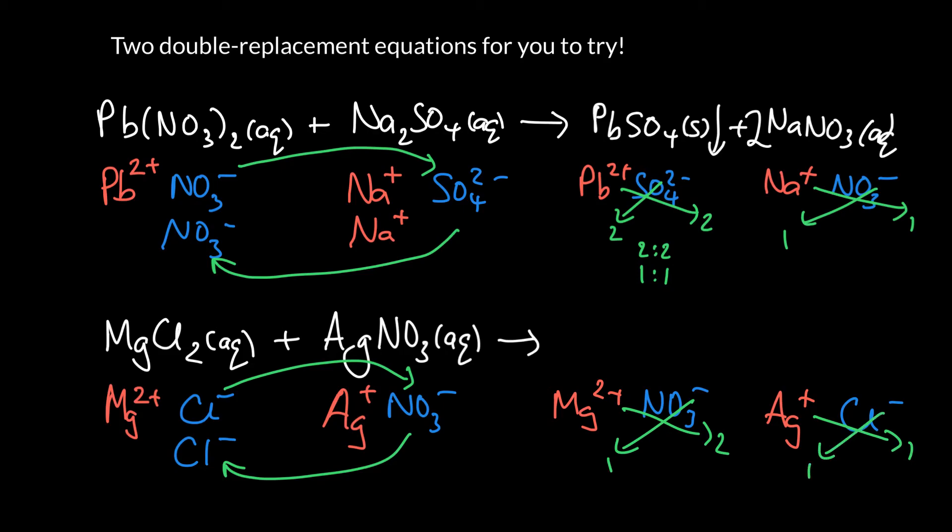So everything is totally fine. Remember, we don't ever write the ones in unless we're really trying to make a point. So we've got Mg. We've got two nitrates. So NO3 in parentheses, right? When we've got more than one, we use parentheses. And we just got one Ag and one Cl. So we just write AgCl.